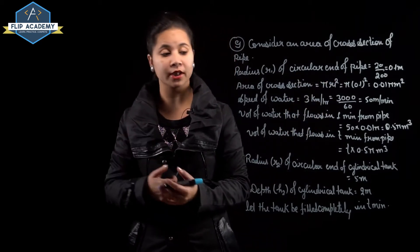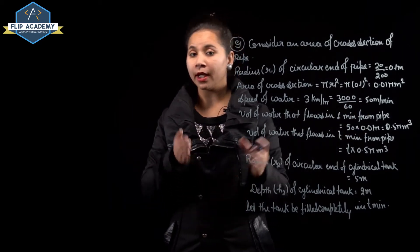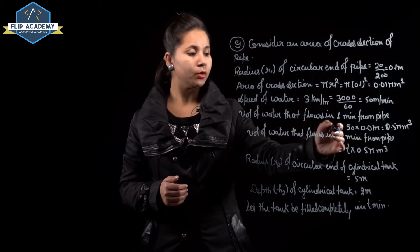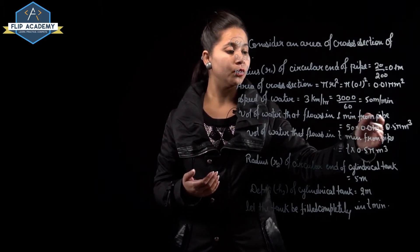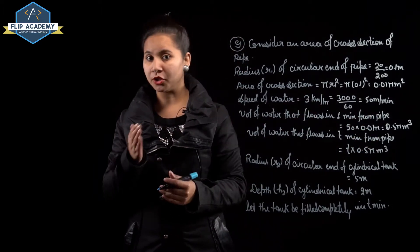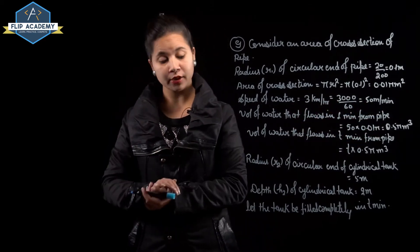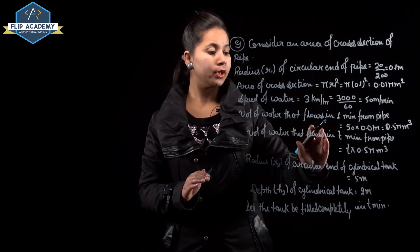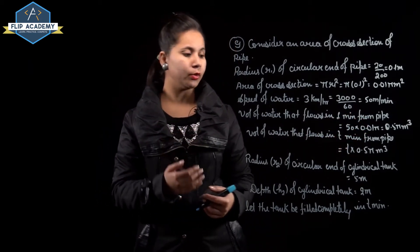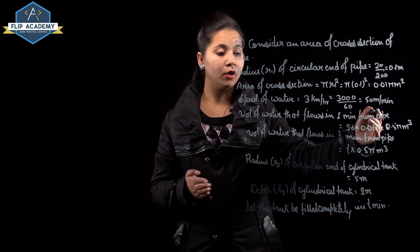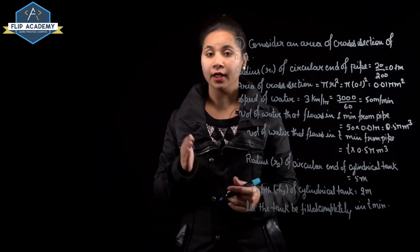Volume of water flowing from pipe in 1 minute = 50 × 0.01π = 0.5π m³. Volume of water flowing in t minutes = t × 0.5π m³.